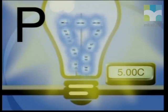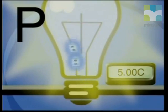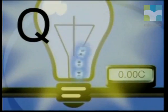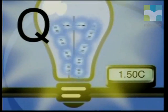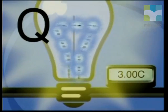Now let's look at light bulb Q. Light bulb Q has only three coulombs of charge passing through it in one second. Thus we can conclude that the current passing through light bulb P is greater than through light bulb Q, because more coulombs of charge pass through P than through Q in the same time.